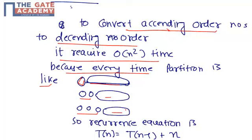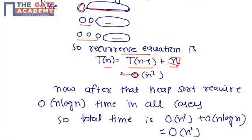So our recurrence equation becomes T(n) equals T(n minus 1) plus n, that is the cost of calculating nth function. So if you solve this, then it becomes O(n²).